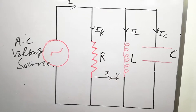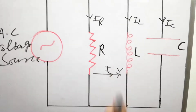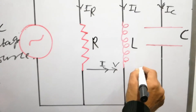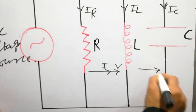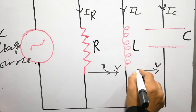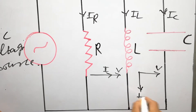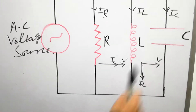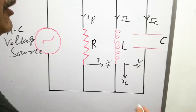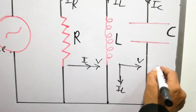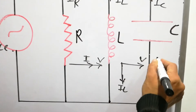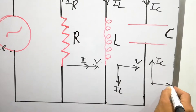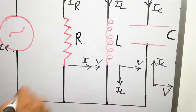For the inductor, the current is lagging the voltage — IL lags the voltage. For the capacitor, the current is leading the voltage. The voltage remains the same across each component since they are in parallel.